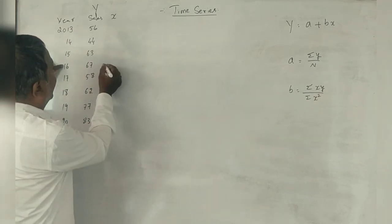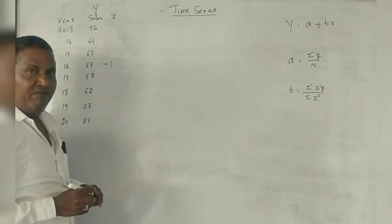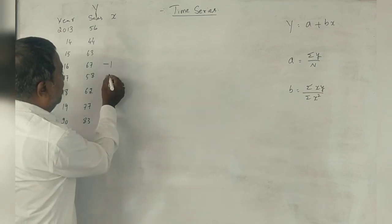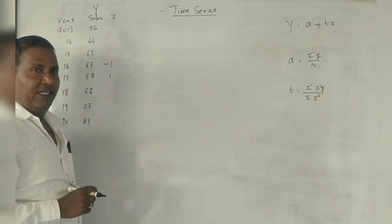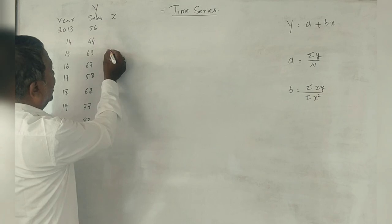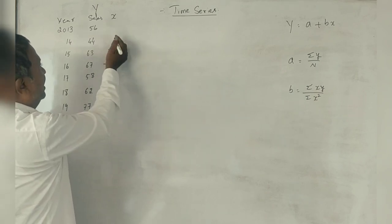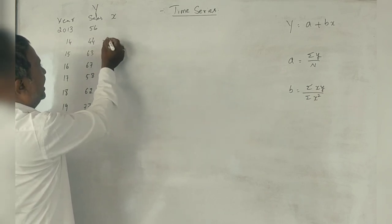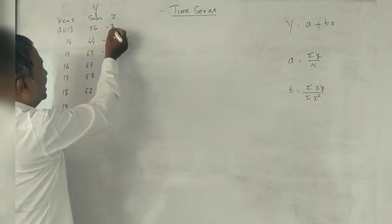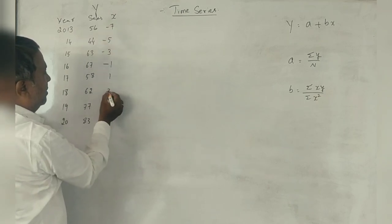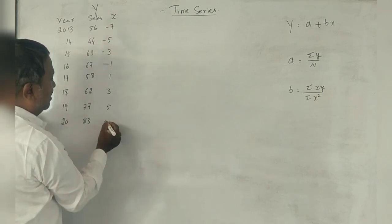Now, 2016 minus 1, 2017 plus 1. So even, next odd, next odd - minus 7, next minus 5, minus 3, minus 1, plus 1, plus 3, plus 5, plus 7.